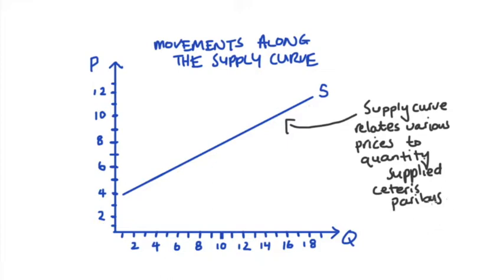So what we're seeing in the line here is that for all of the possible prices, that's the variable on the vertical axis, what the quantity supplied is for each of those prices, so that's the horizontal axis variable, holding everything else constant.